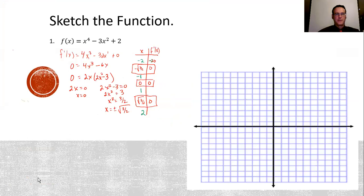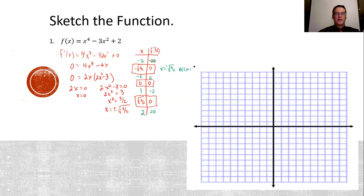I got negative 20 for x = -2, and positive 20 for x = 2. At x = -√(3/2), f'(x) moves from negative to positive values — that means a relative min. At x = 0, f'(x) goes from positive to negative — that means a relative max. And at x = √(3/2), f'(x) again goes from negative to positive values — that is a relative min.